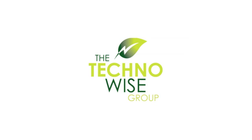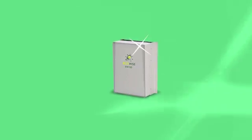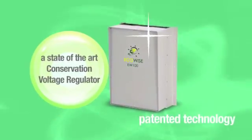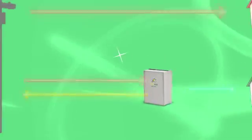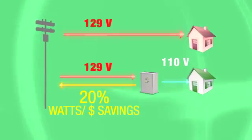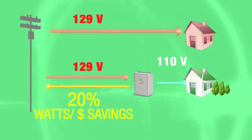TechnoWise is proud to announce the EchoWise product line. EchoWise is a state-of-the-art conservation voltage regulator utilizing patented technology. EchoWise provides significant savings on your electric bill and extends the operating life of your electrical devices by managing the power in your house to the most optimal level.